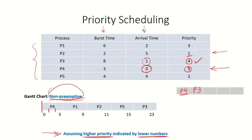At time 2, process P1 arrives and is also placed in the ready queue, but P4 continues running. At time 3, P4 completes its CPU burst of 3 time units and exits the system.